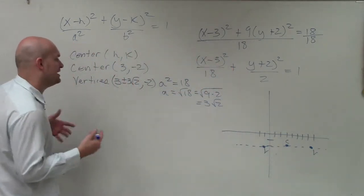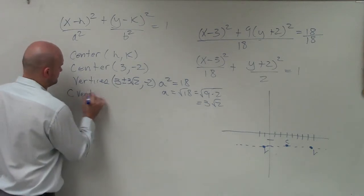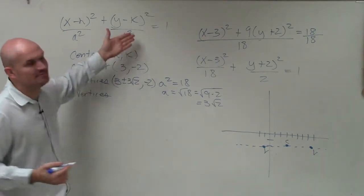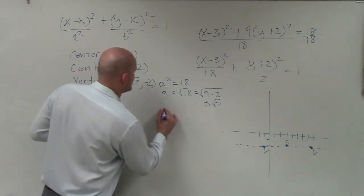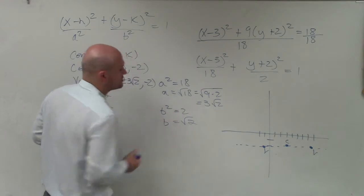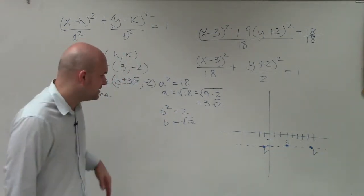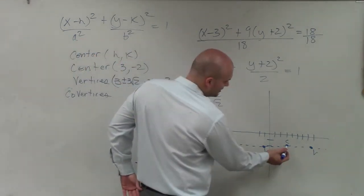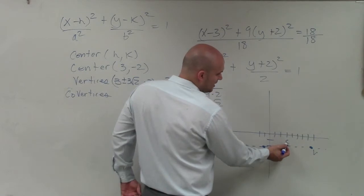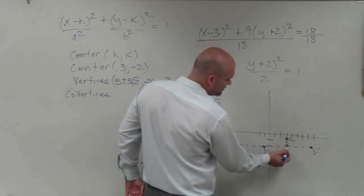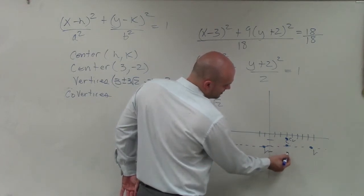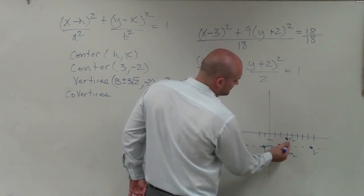Next, let's identify the co-vertices. Since b squared equals 2, b equals the square root of 2, which is about 1 and a bit. From the center I go up approximately 1 to between 1 and 2 units — that's one co-vertex — and then down the same distance for the other co-vertex.